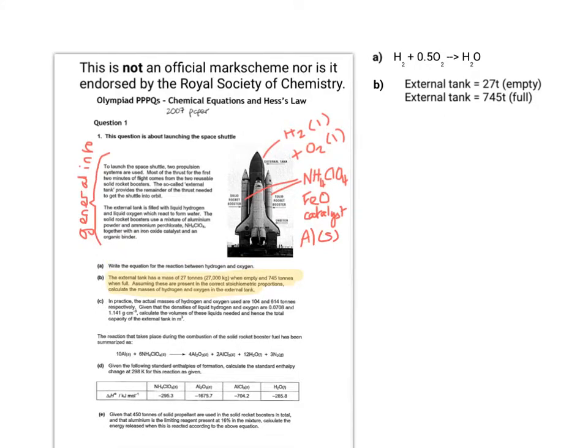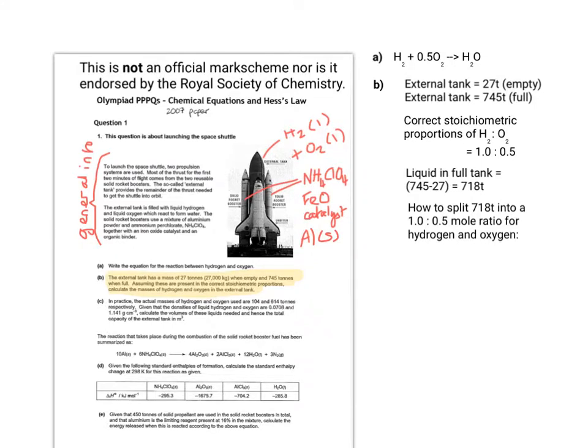The next one tells you that the external tank is 27 tonnes empty and 745 tonnes when full. We need to work out the actual mass of liquid, not taking into account the tank itself. Assuming the oxygen and hydrogen are present in correct stoichiometric proportions, which would be 1 to 0.5, the liquid in a full tank is 718 tonnes. We've got to split that 718 tonnes into the correct mole ratio for hydrogen-oxygen.